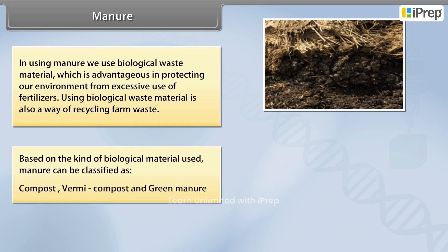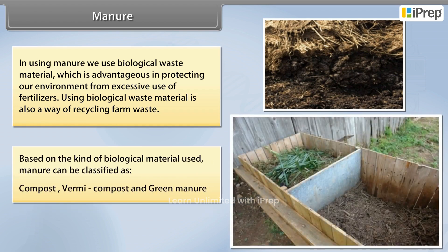Based on the kind of biological material used, manure can be classified as compost, vermicompost, and green manure.